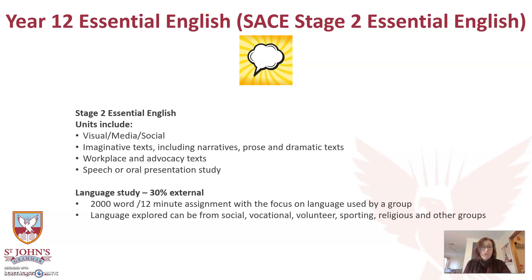Year 12 Essential English follows on from Year 11 Essential English and allows students to study and create shorter compelling texts. Each course is designed around the needs of that particular class and their interests. Tasks are creative and analytical, and students have the opportunity to advocate for a group that needs its voice heard. The external component of this course requires students to write a 2000-word report on how language is used by a group of their choice. There is no examination in this subject, and students enjoy this course because of its real-world application.